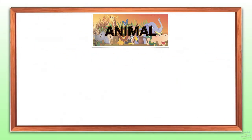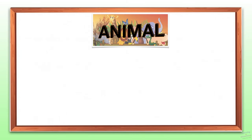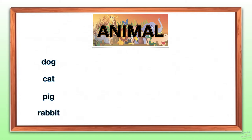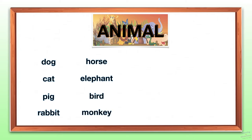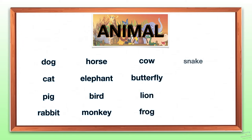Example of an animal. Dog, Cat, Pig, Rabbit, Horse, Elephant, Bird, Monkey, Cow, Butterfly, Lion, Frog, Snake, Fish, Shark, Jellyfish.